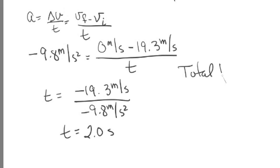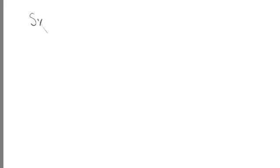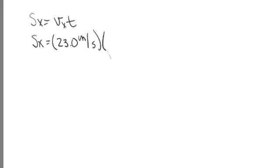The total time — the time it takes for the object to start at the ground, go up, and come back down — is just 2 times the amount of time it takes to get to the top of the arc, since the object takes just as much time to come down as it did to go up. For our particular problem, that's 2 times 2 seconds, or a total flight time of 4 seconds. The range S sub x is V sub x times total time: 23.0 meters per second times 4.0 seconds, giving a distance downrange of 92.0 meters.